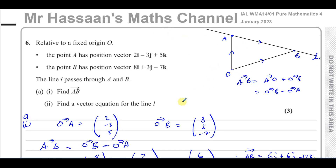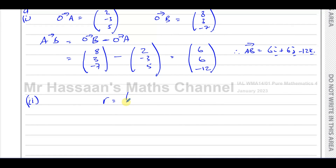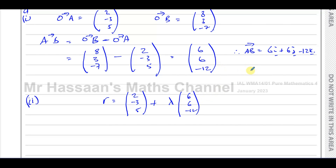One possible answer for the vector equation of the line is OA, which is (2, -3, 5) — that takes you to the line — plus some scalar parameter λ times the direction vector (6, 6, -12). I could also use OB, which is (8, 3, -7), as the point instead.